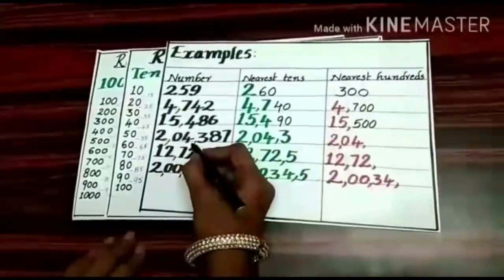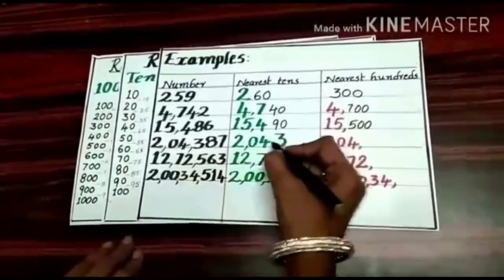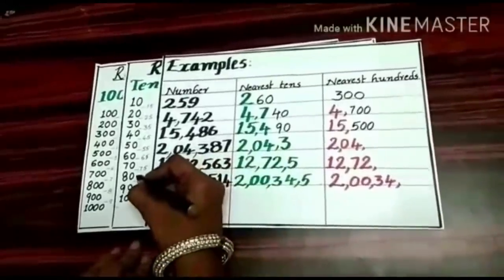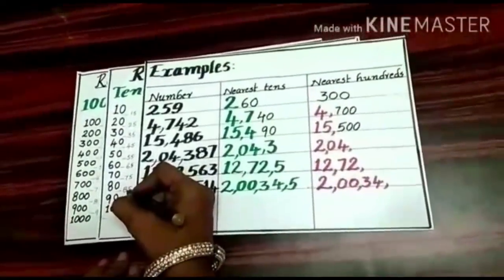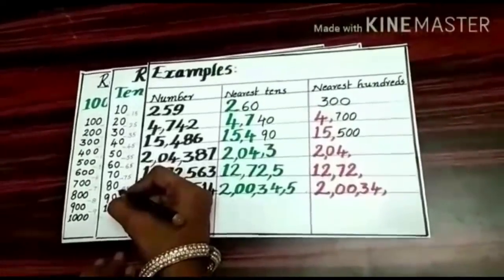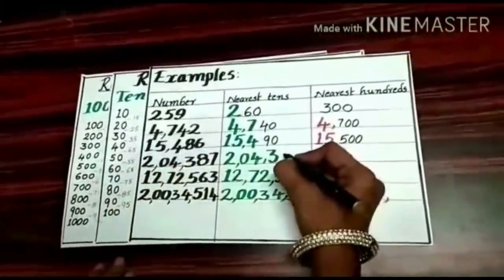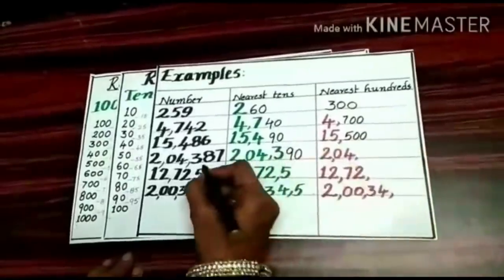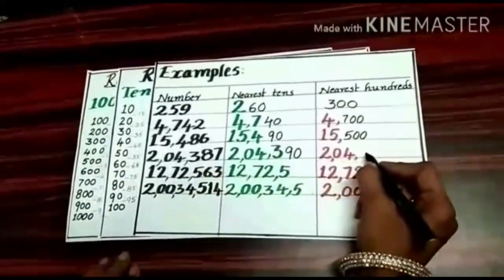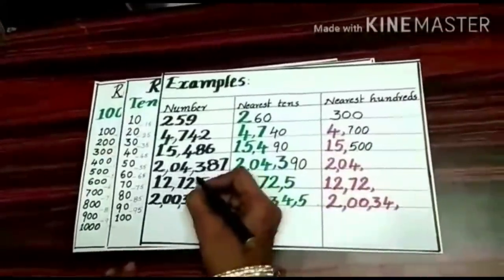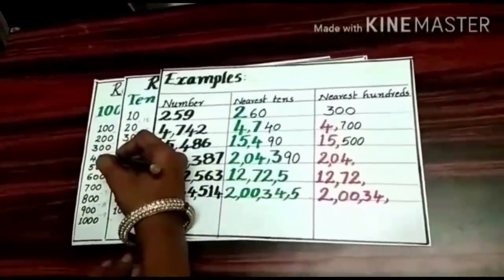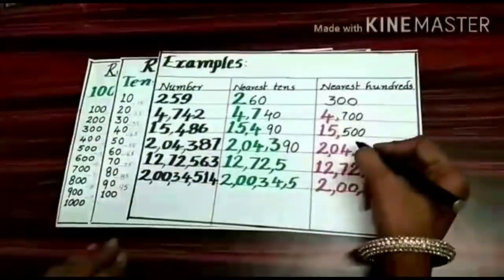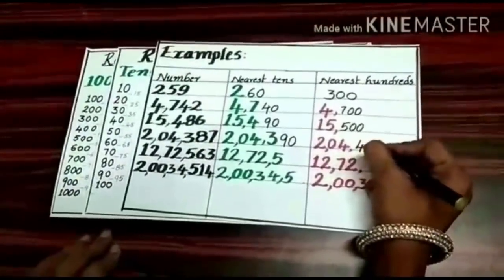This is a 6-digit number. Round off to the nearest 10s: 87 lies between 80 and 90, and it is more than the middle number, so round up to the next 10 — that is 90. Now round off to the nearest 100s: 387 lies between 300 and 400, and it is more than the middle number, so round up to the next 100 — that is 400.